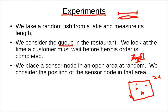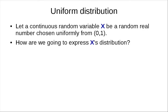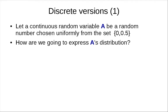Let's try to formulate this and talk about probabilities in this new setting. Consider a simple random variable X: a random real number chosen uniformly from 0 to 1. How are we going to express X's distribution? We'll try to go from discrete to continuous and see what ideas we can use from the discrete case and apply to the continuous case.